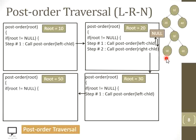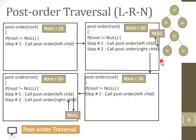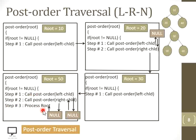In the window for root equals 50: condition root not null is true. We call post-order recursively passing its left child — 50's left child is null, so it returns to the next statement. Next, we call post-order passing its right child — 50's right child is also null, so it returns to the next statement. The next statement is to process the root node. The current root node is 50, so here I am processing root node 50.